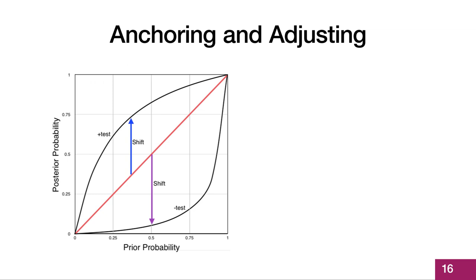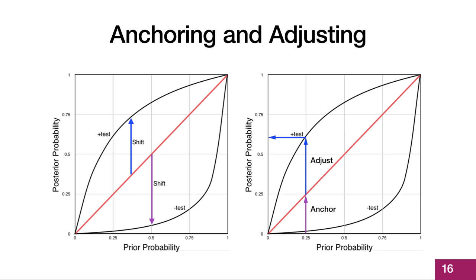Here is another way of visualizing the anchoring and adjusting heuristic. The diagram shows a range of possible prior probabilities on the x-axis and the range of possible post-test or posterior probabilities on the y-axis. The graph shows how your probability estimate would shift upward or downward based on whether the test result is positive or negative. The amount of shift or adjustment depends upon the magnitude of the likelihood ratio of the test. The diagram on the right shows an example of how we might anchor our pretest probability at 0.25 or 25%, where a positive test result would shift our probability estimate upward to approximately 0.6 or 60%.